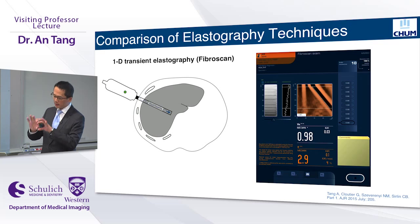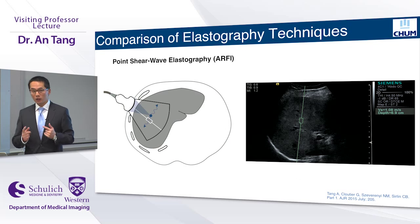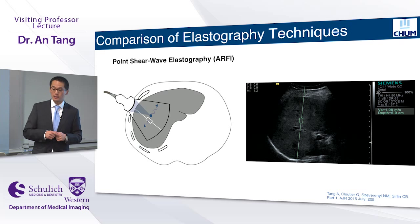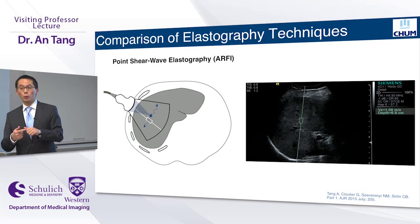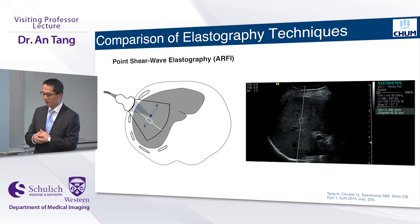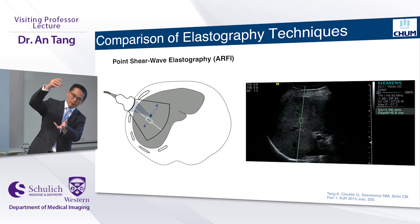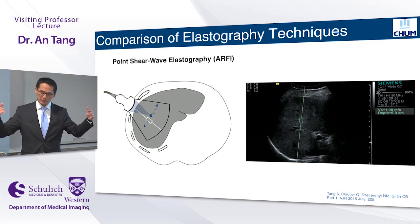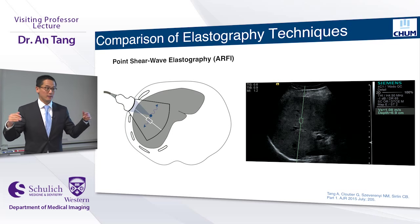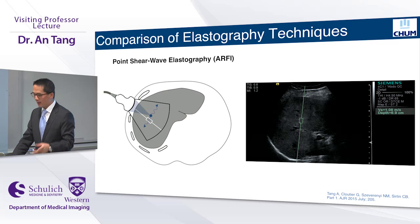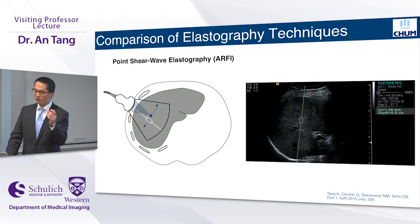Typically, users perform 10 measurements, and the system reports the median and interquartile range to assess measurement validity. More recently, elastography techniques have been implemented into clinical ultrasound systems, known as point shear wave elastography, also commercialized as acoustic radiation force impulse (ARFI). The idea is that we focalize an ultrasound beam in an area, and like a pebble dropped in a pond, it generates waves traveling sideways. We measure the speed of these waves, which travel slowly in soft tissue and more rapidly in stiff or cirrhotic tissue. An advantage is that we can use B-mode imaging to place a region of interest away from vessels and the capsule.